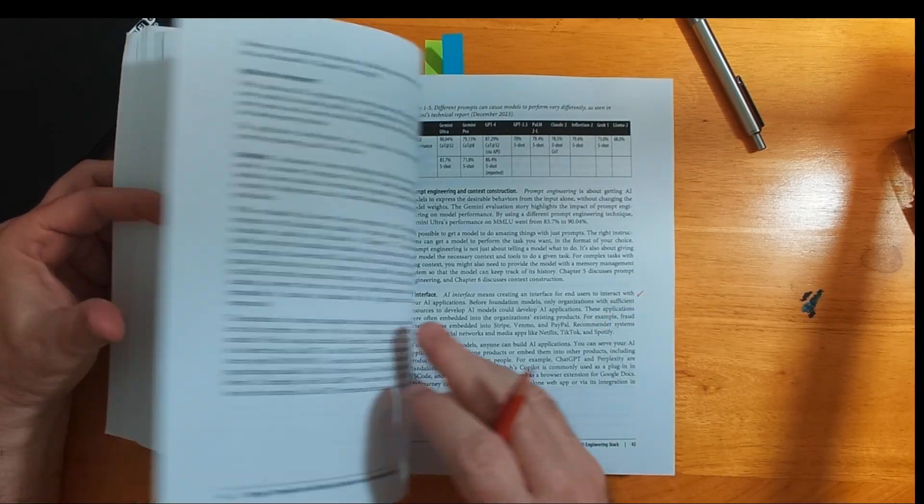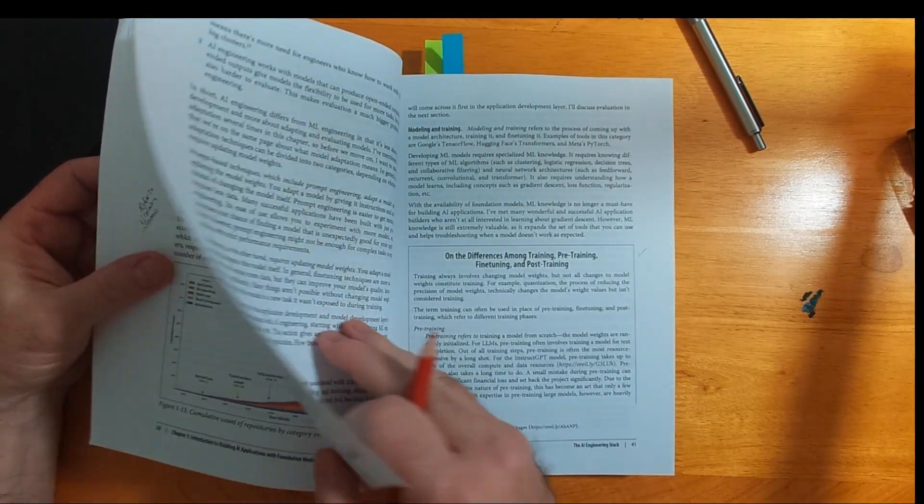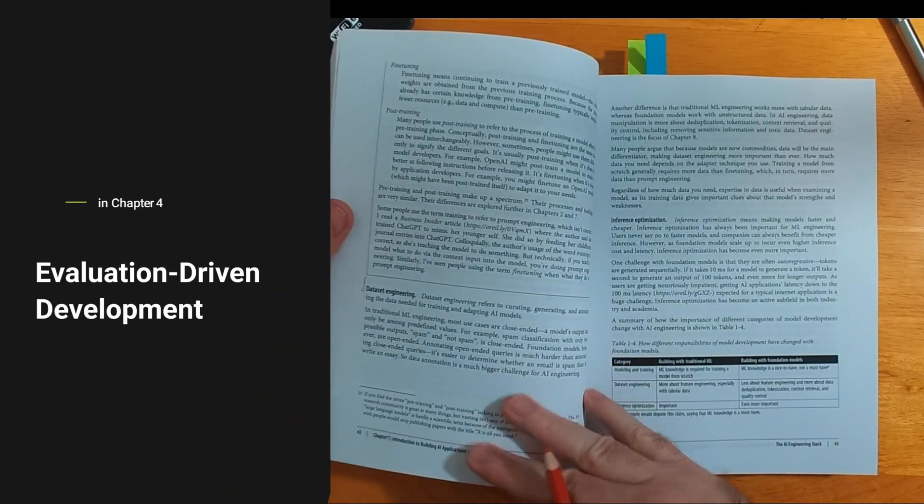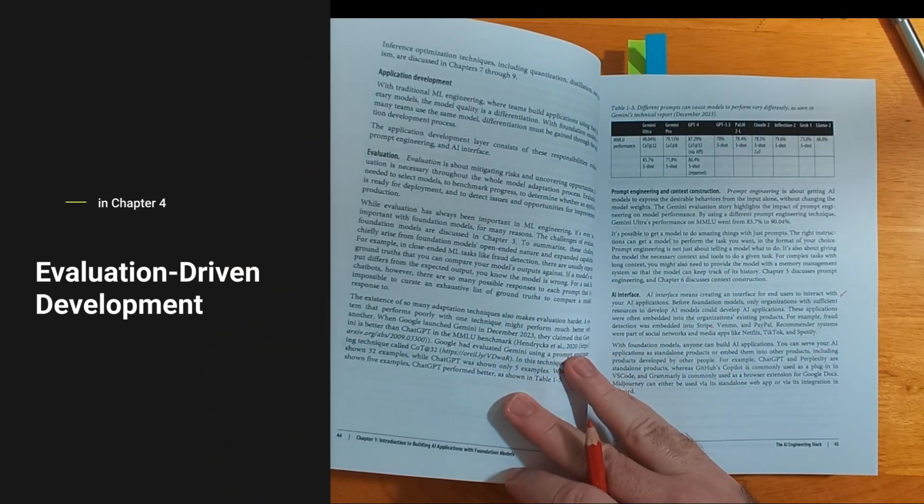Like a lot of technical books, you will be referring back to different sections. That's why it's good to have a printed version of this book. In chapter four, Chip introduces the term evaluation-driven development.